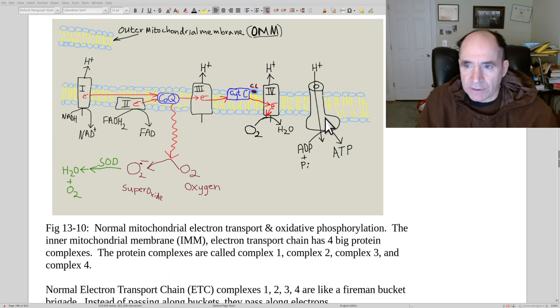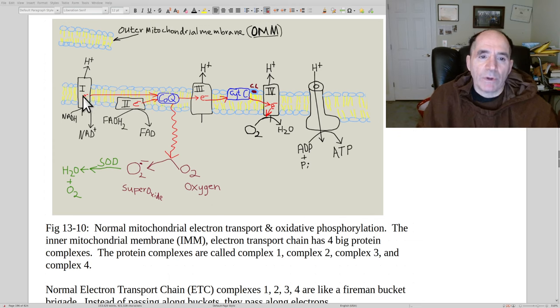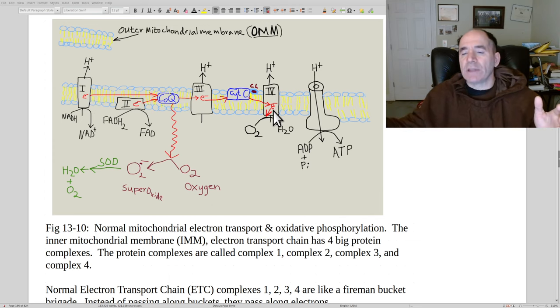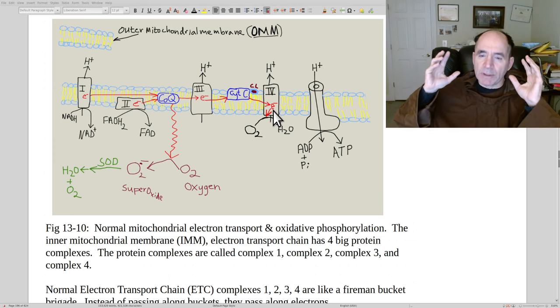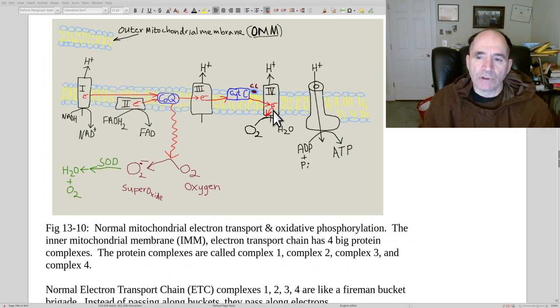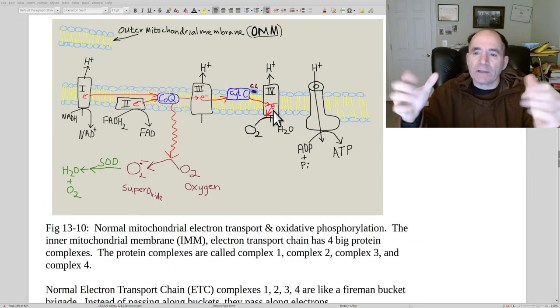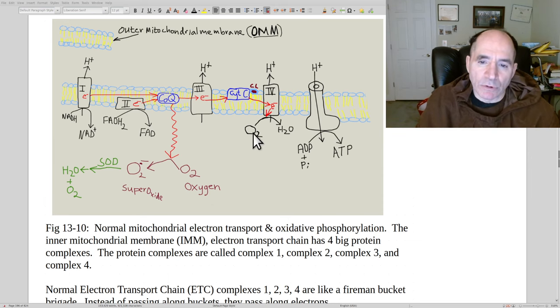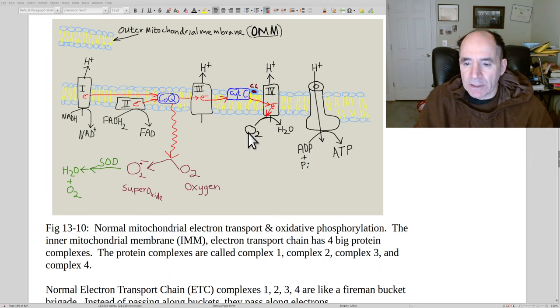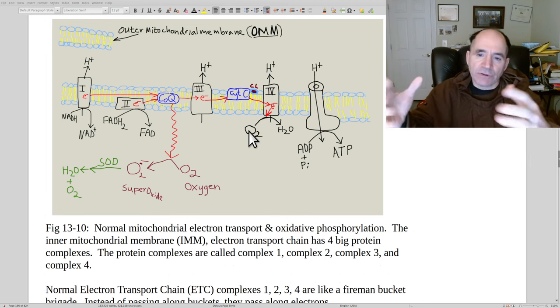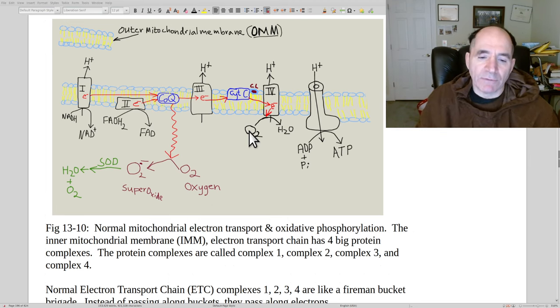This right here is ATP synthase. It's going to make ATP, adenosine triphosphate. With carriers 1, 2, 3, 4, you're basically handing off electrons like a fireman bucket brigade. It's also like a snowball rolling down a hill towards progressively more aggressive, stronger electron grabbers. Oxygen is the ultimate electron acceptor with high electronegativity. It really wants to grab electrons.